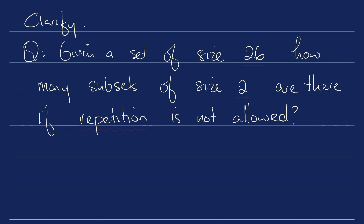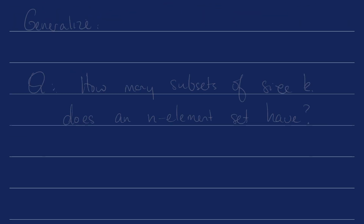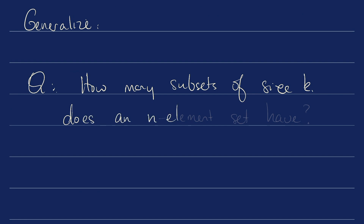After we clarify, the next thing we can do is generalize. Mathematically speaking, it's always good to generalize. So here I have a set of 26 — it didn't really need to be 26 — and a subset of size 2 — it didn't really need to be 2. The concept of sets already takes into account that repetition is not allowed. So we can generalize the question to: how many subsets of size k does an n element set have?